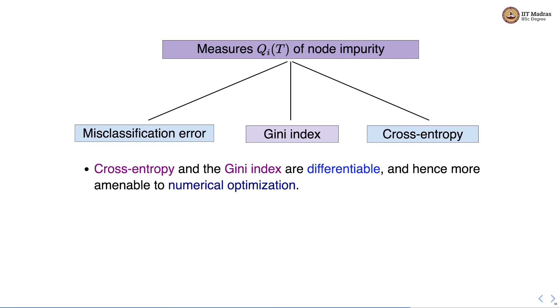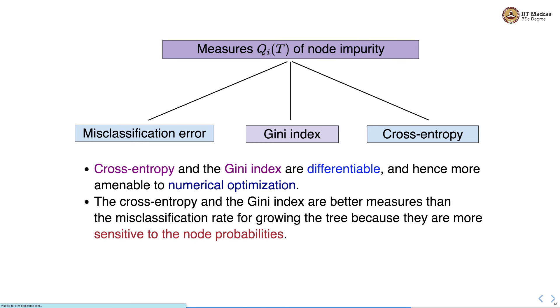Cross entropy and Gini index are differentiable hence more amenable to numerical optimization. The cross entropy and Gini index are better measures than the misclassification rate for growing the tree because they are more sensitive to the node probabilities.